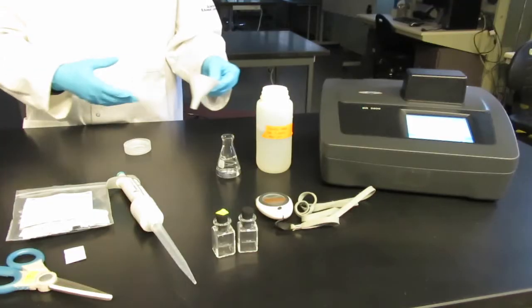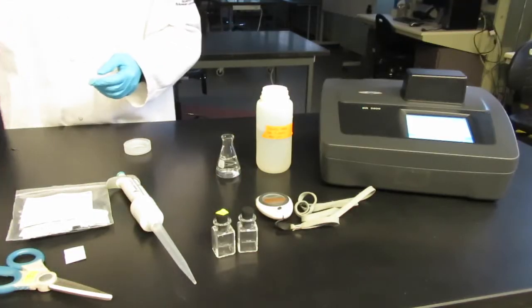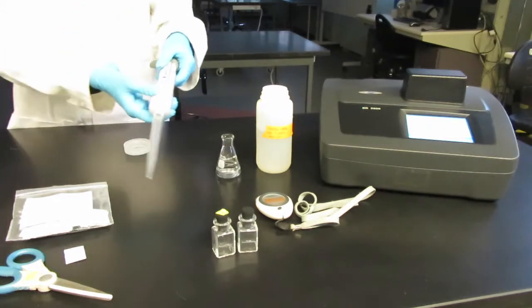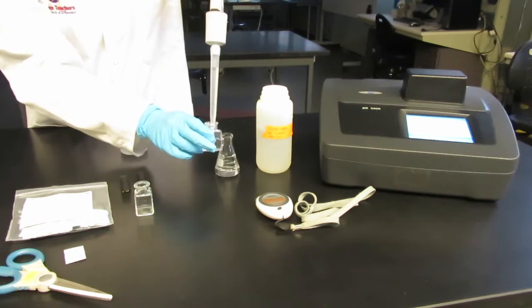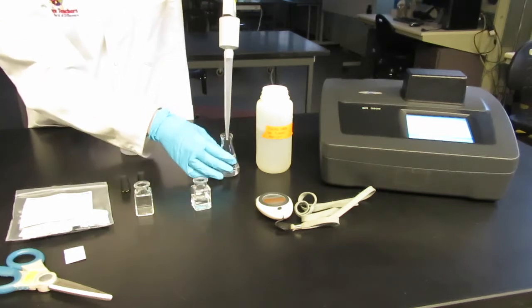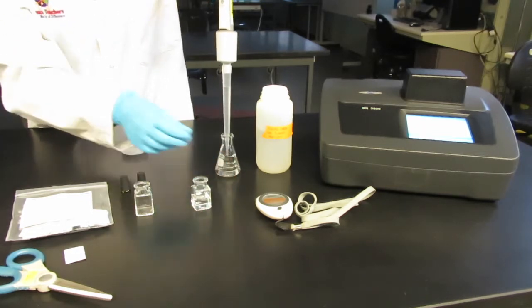Using a 10 milliliter pipette add 10 milliliters of the filtered water sample into two of the square cuvettes. One will be your sample and one cuvette will be your blank. Make sure your stoppers are labeled.